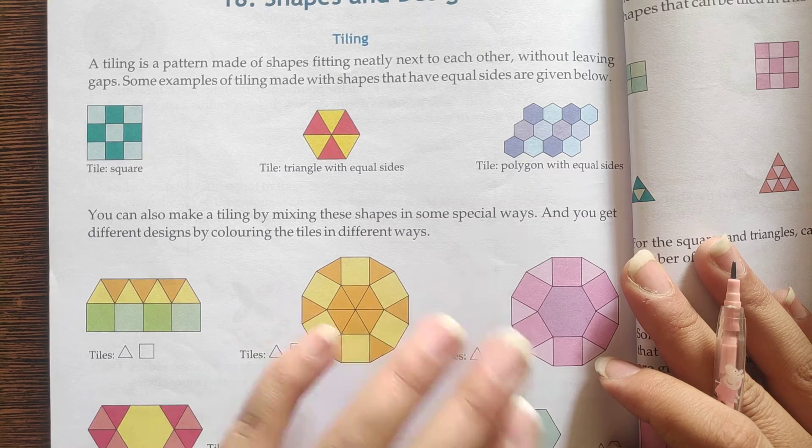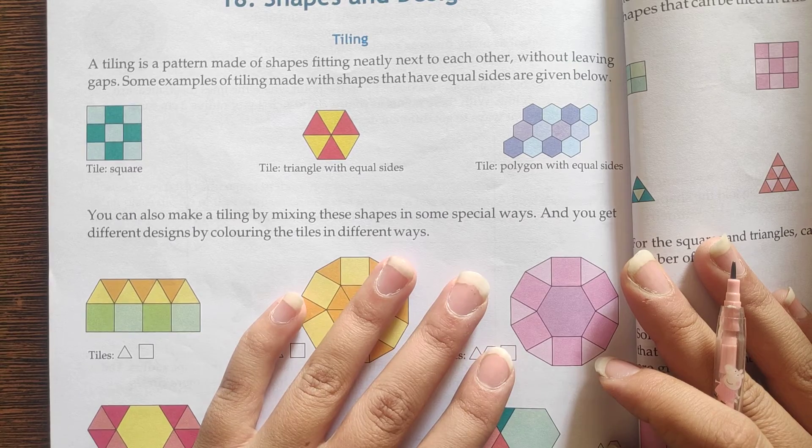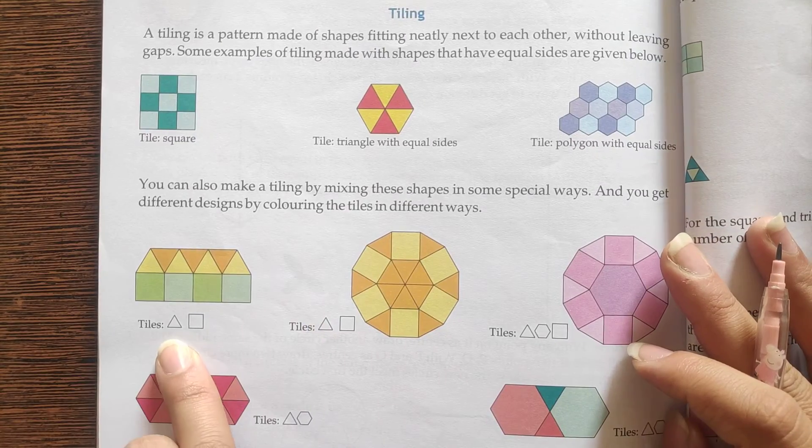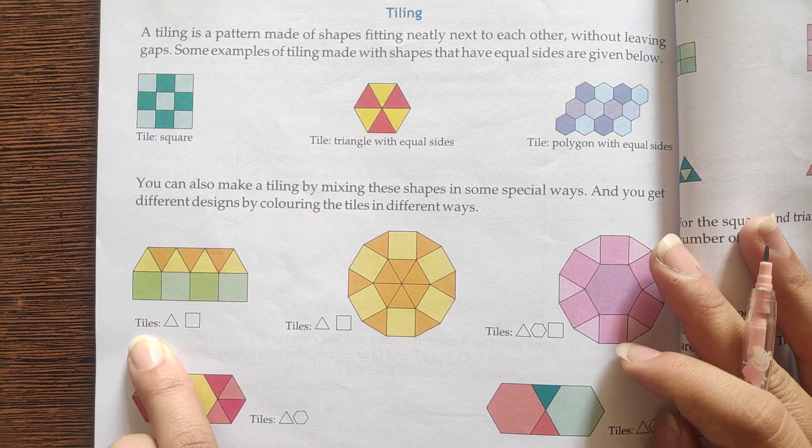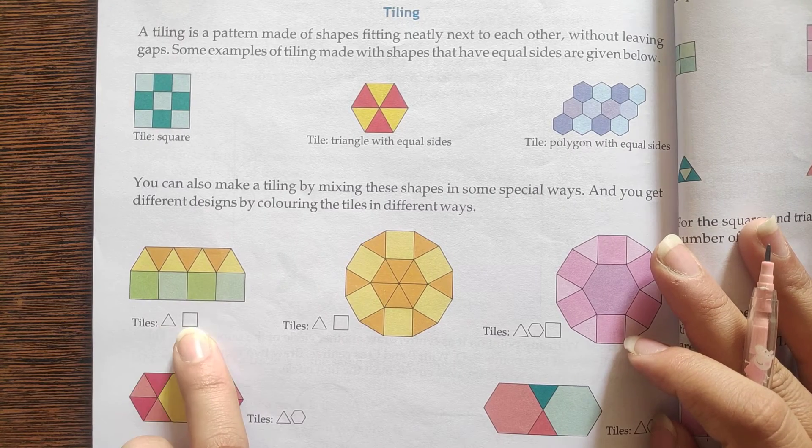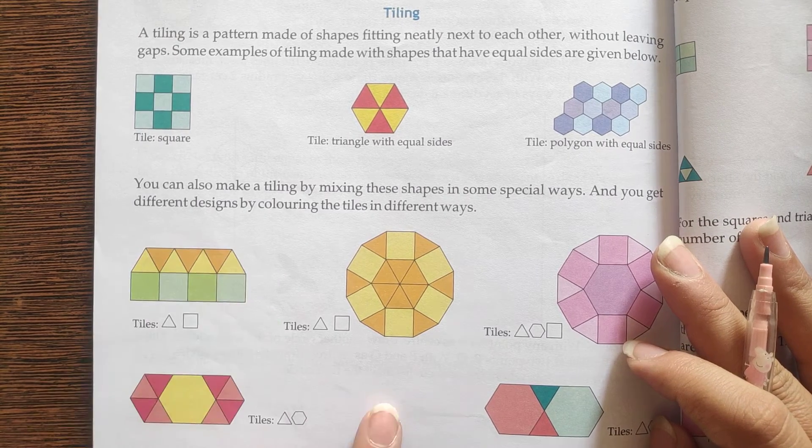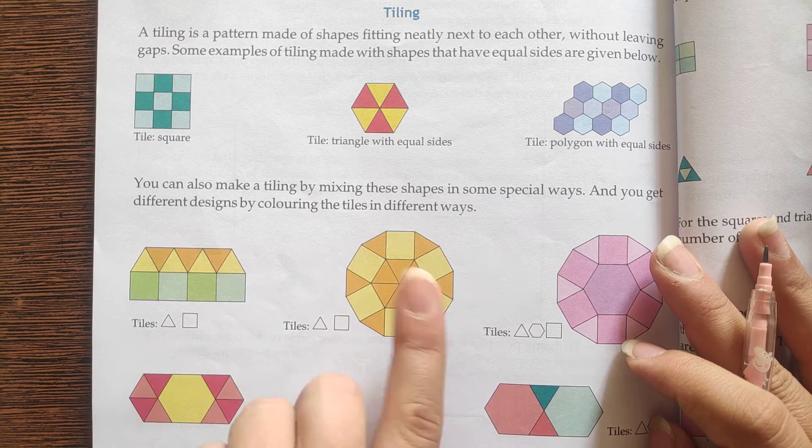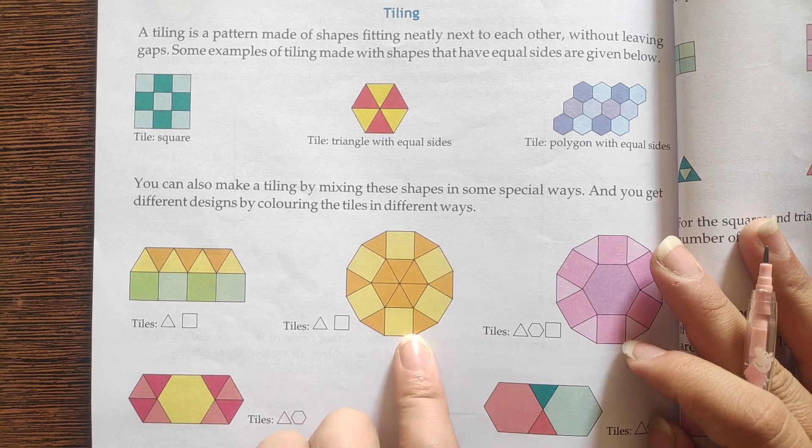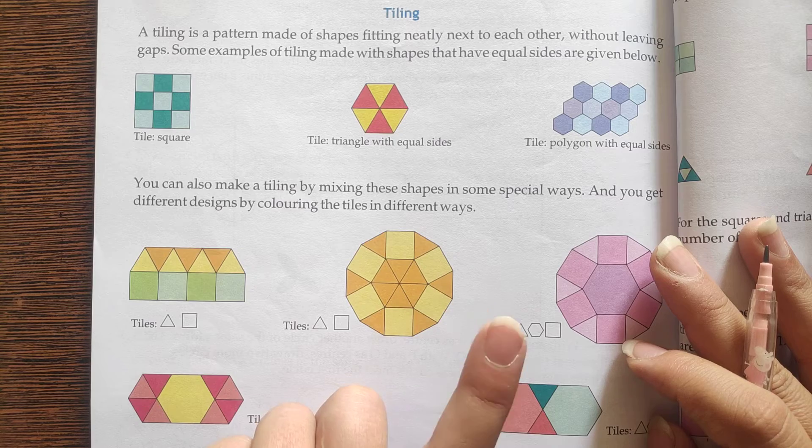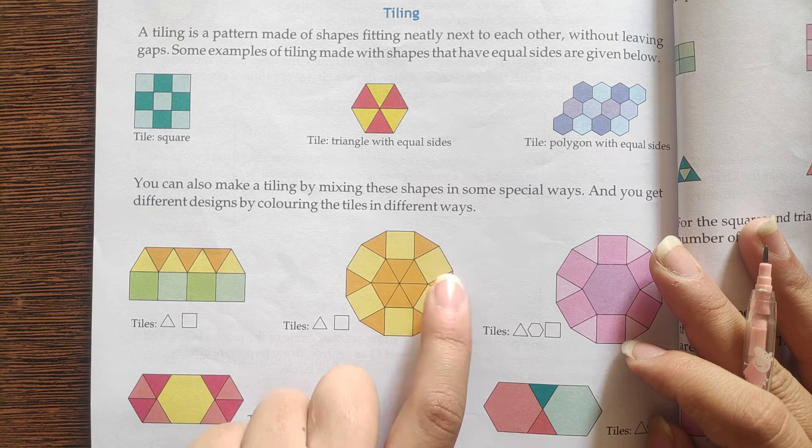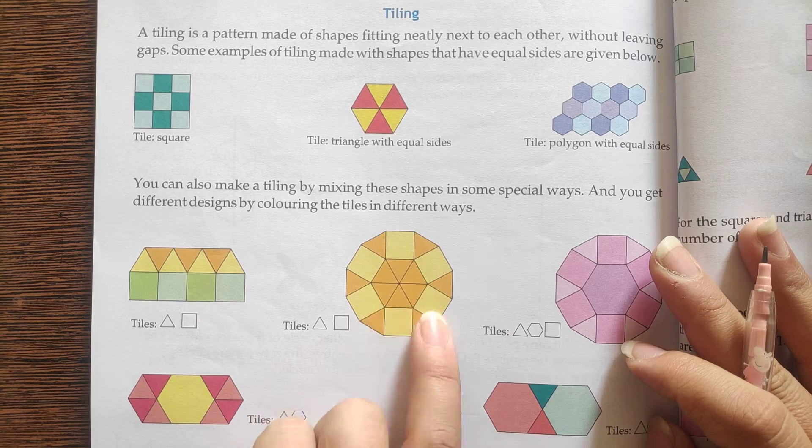Like in this one. In tiles, what have we used here? Triangles and squares. These are squares and these are triangles. Next, what have we done in design? Squares and triangles. We have designed the tiles.